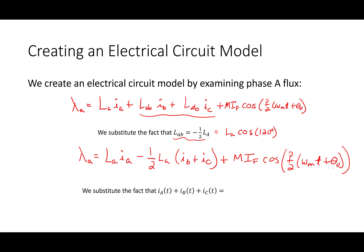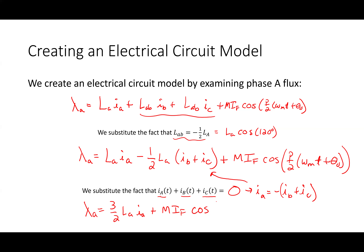For a balanced three-phase set of currents, I_A + I_B + I_C = 0, so I_A = −(I_B + I_C). Substituting that result in, the whole expression becomes: lambda_A = (3/2) L_A × I_A + M × I_F × cos(P/2 × omega_M × t + theta_naught).